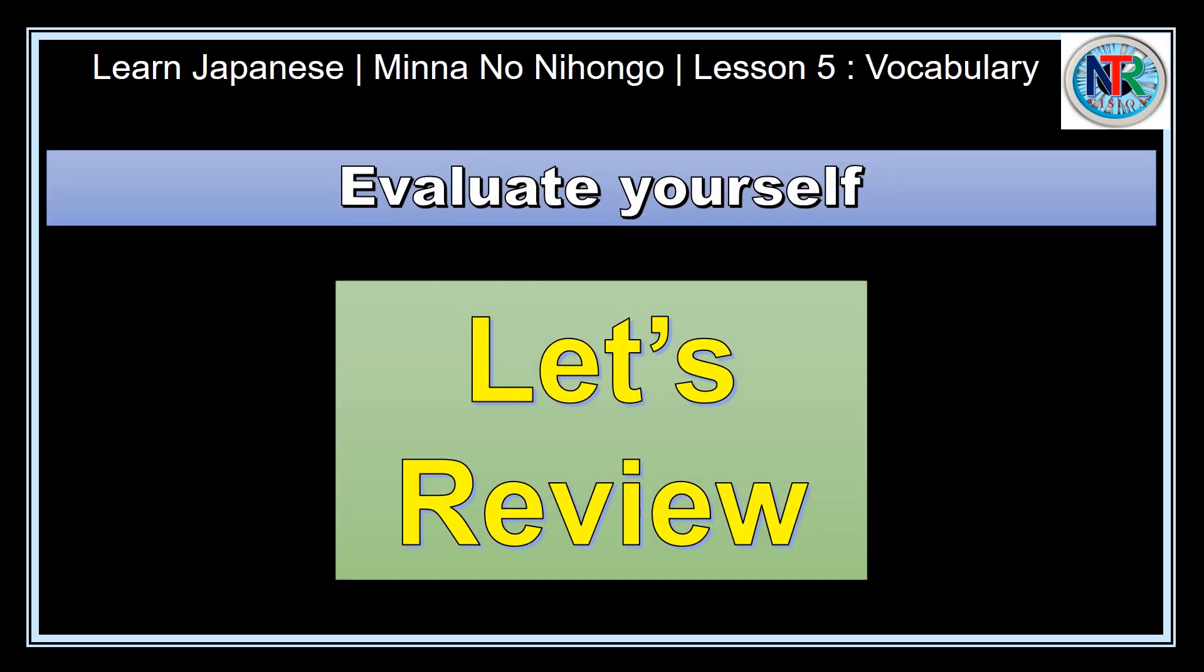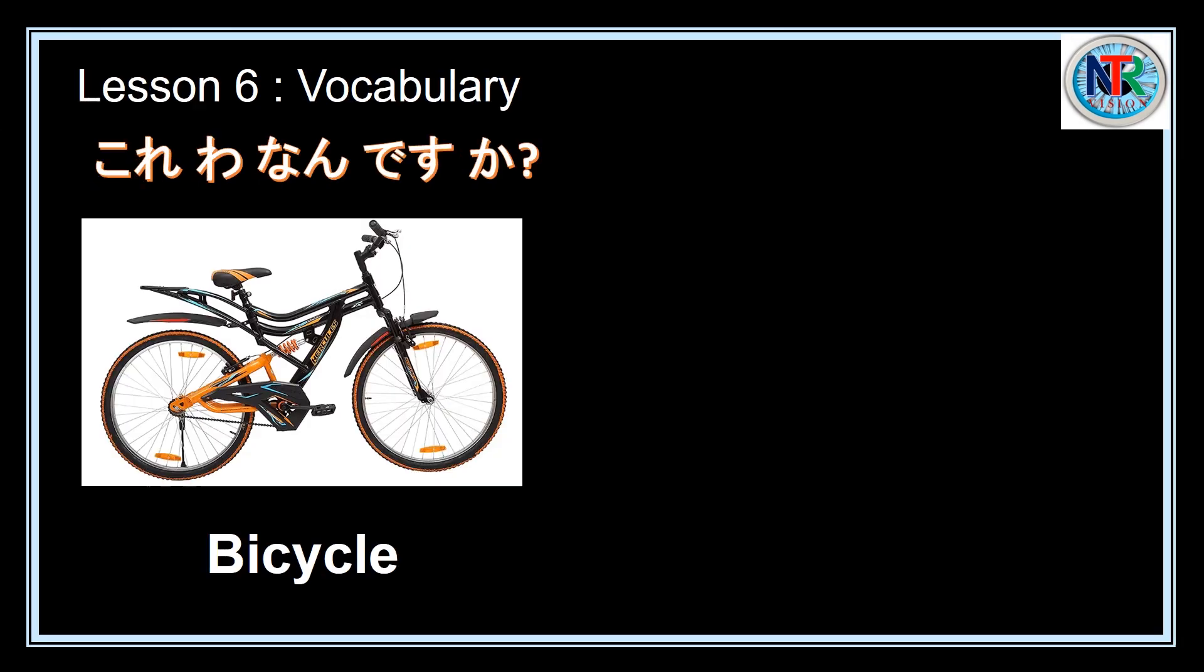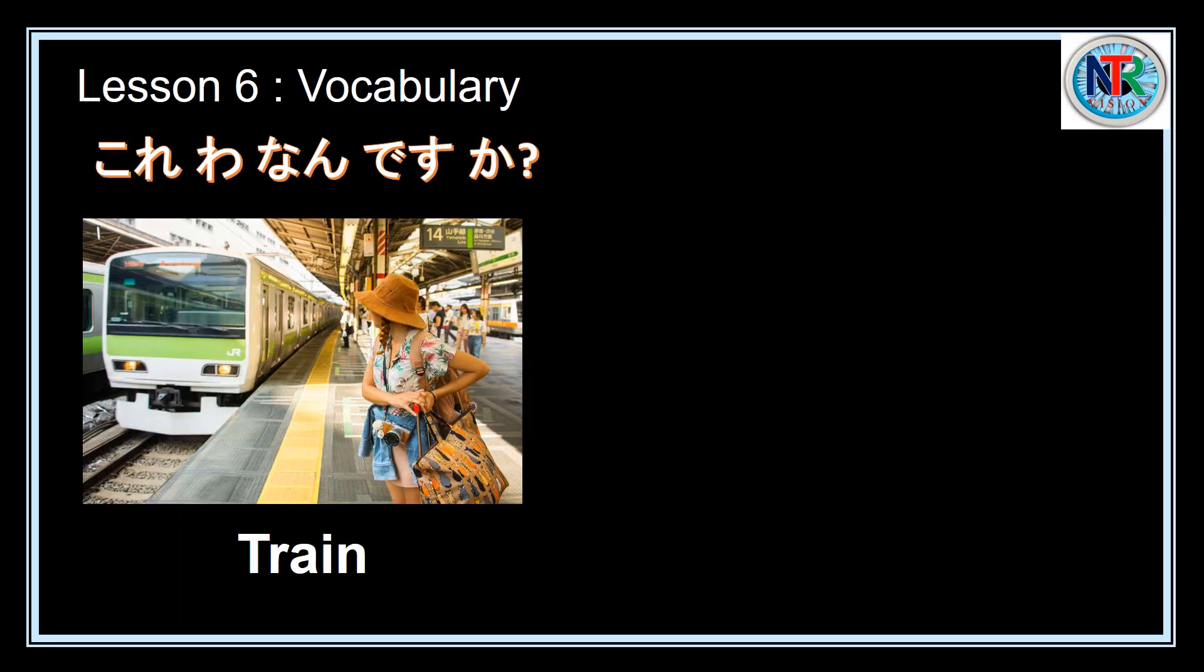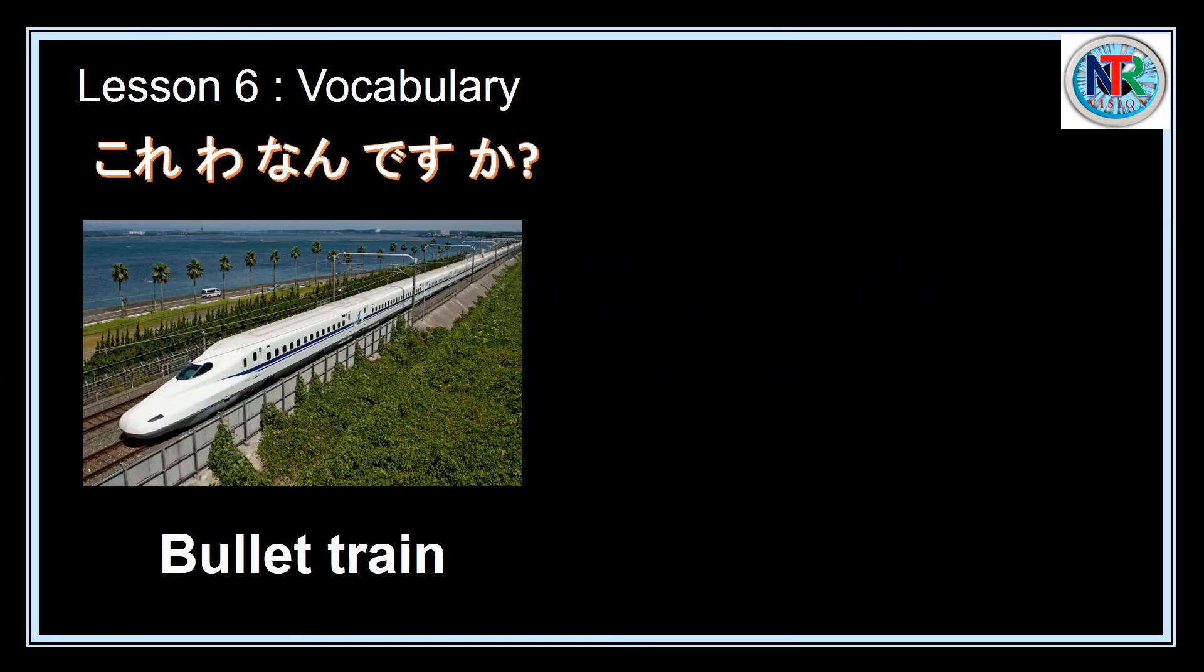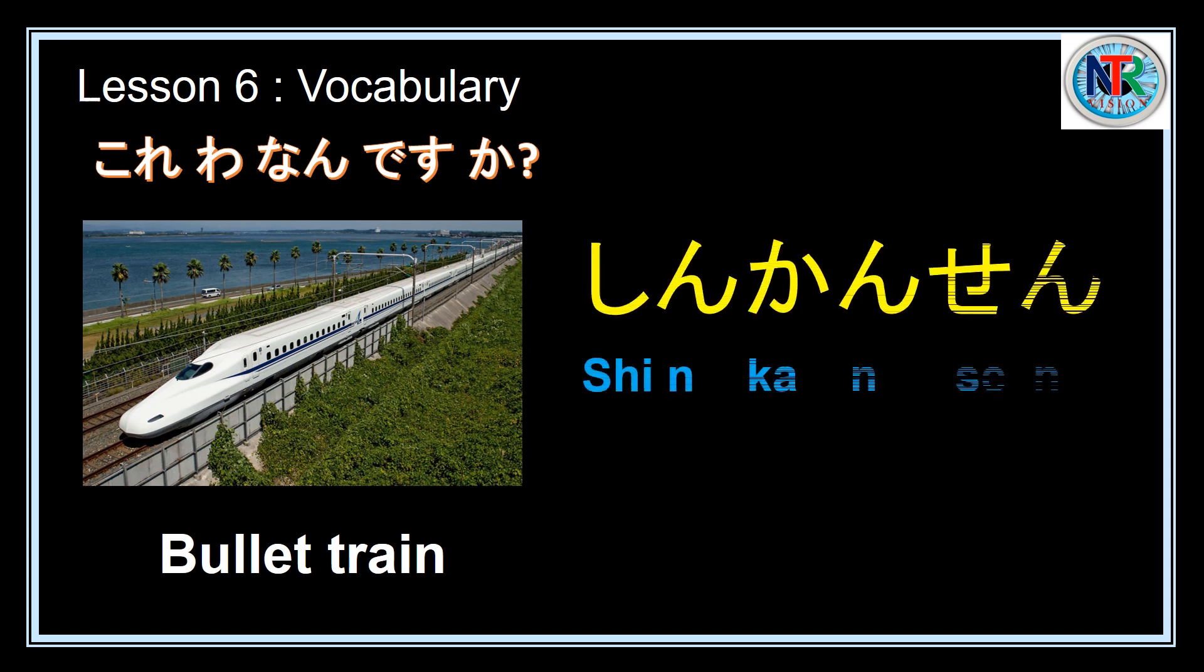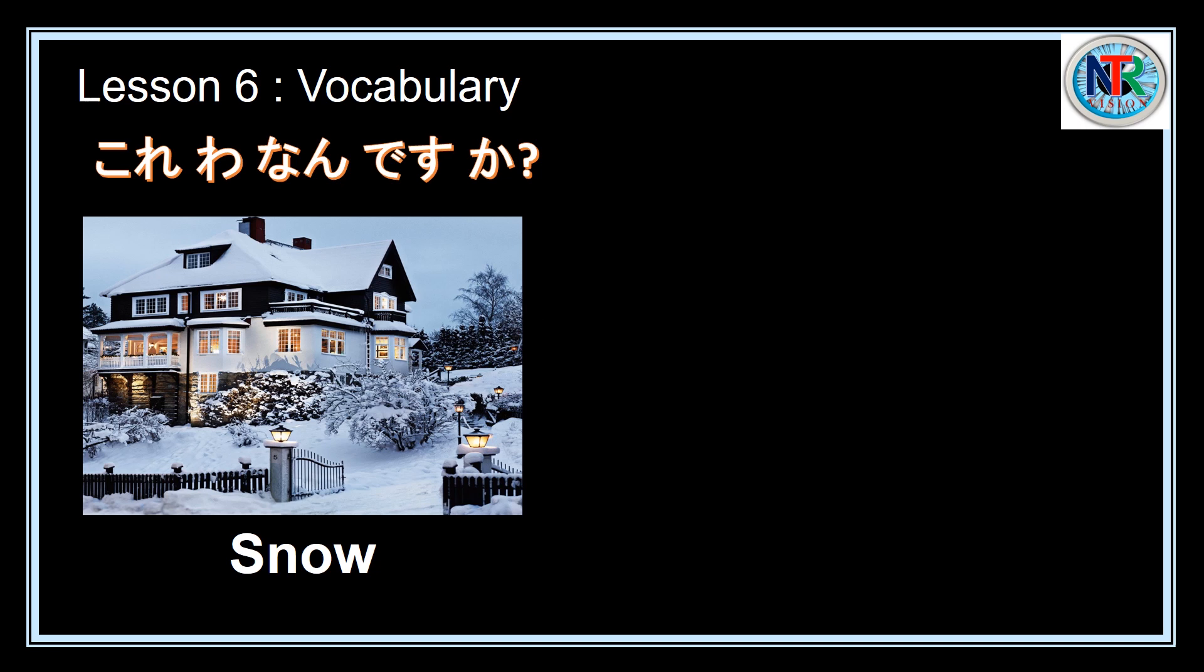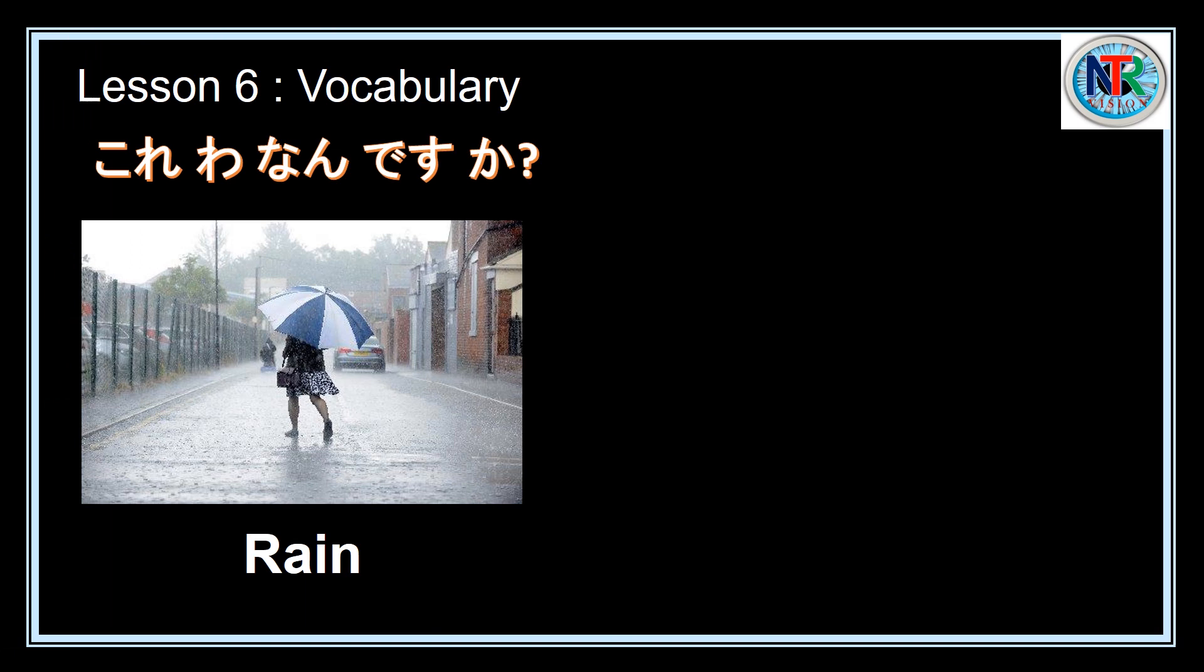Now examine yourself. Let's review. Kore wa nan desu ka? Jitensha desu. Kore wa nan desu ka? Kuruma desu. Kore wa nan desu ka? Densha desu. Kore wa nan desu ka? Shinkansen desu. Kore wa nan desu ka? Hikoki desu. Kore wa nan desu ka? Yuki desu.